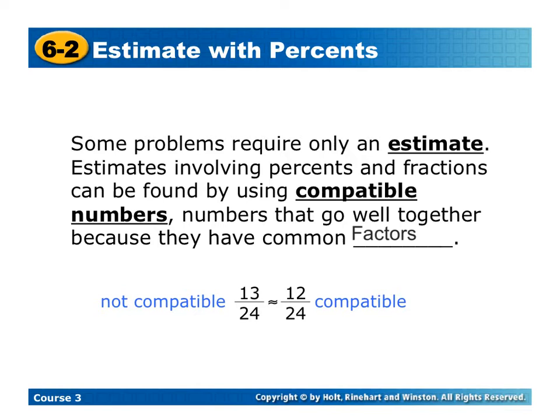So for example, 13 over 24, not very compatible because 13 is prime, but 12 over 24 would be because they would share a common factor of 12.